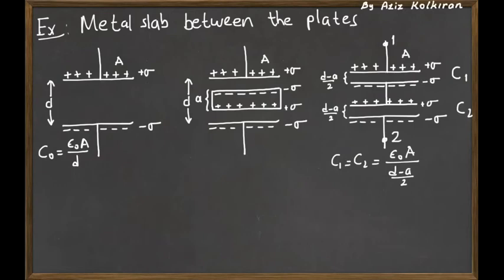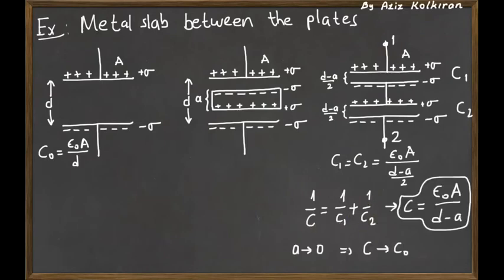The resultant capacitance between the two end points can be calculated by serial addition, and putting in these values the resultant capacitance is epsilon_0 times A divided by D minus A.